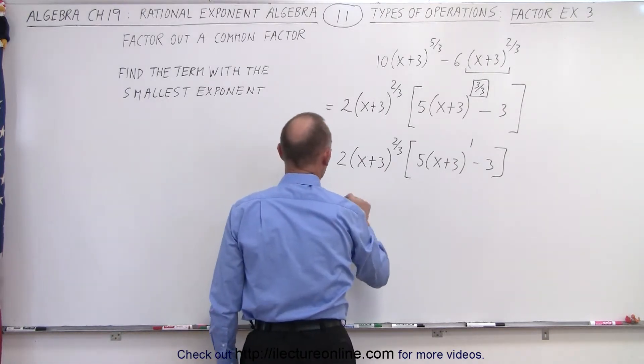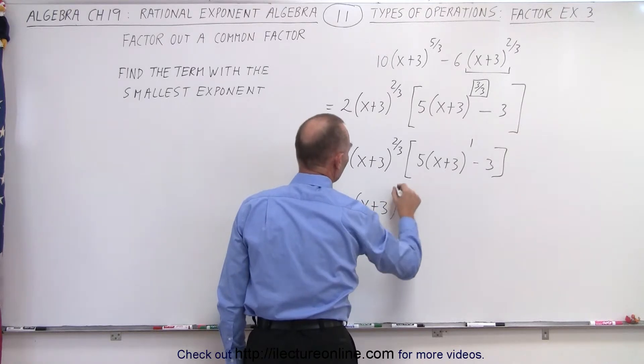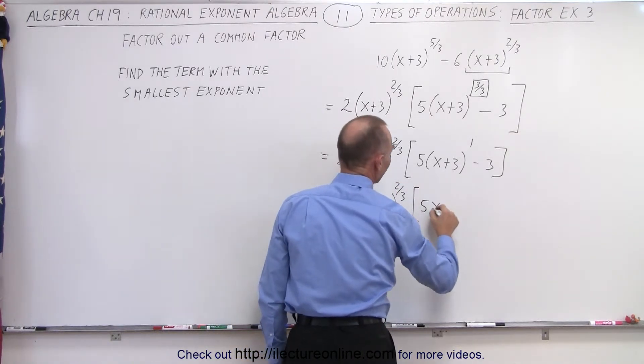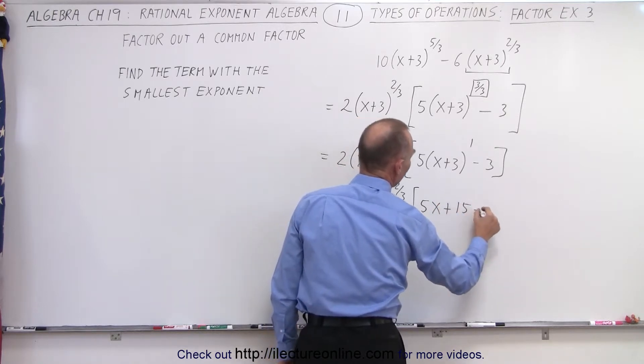So this becomes 2(x+3)^(2/3) times (5x + 15 - 3).